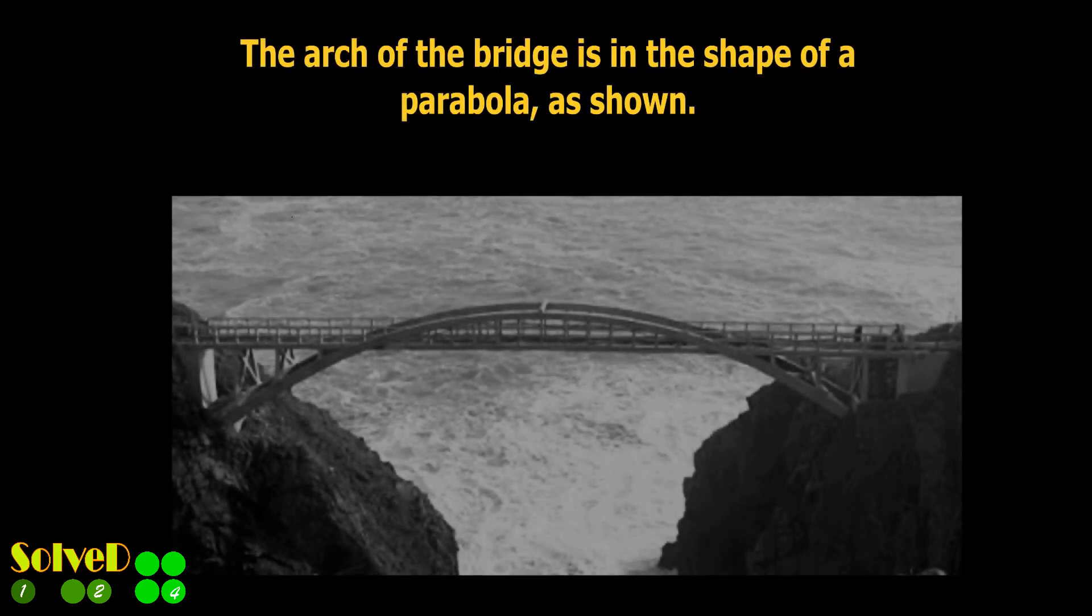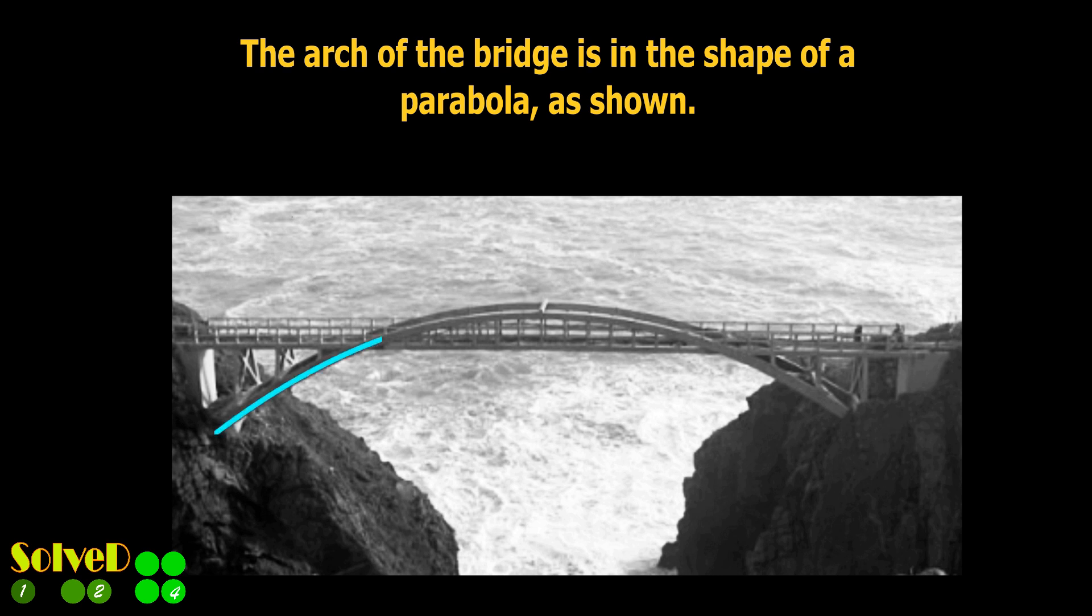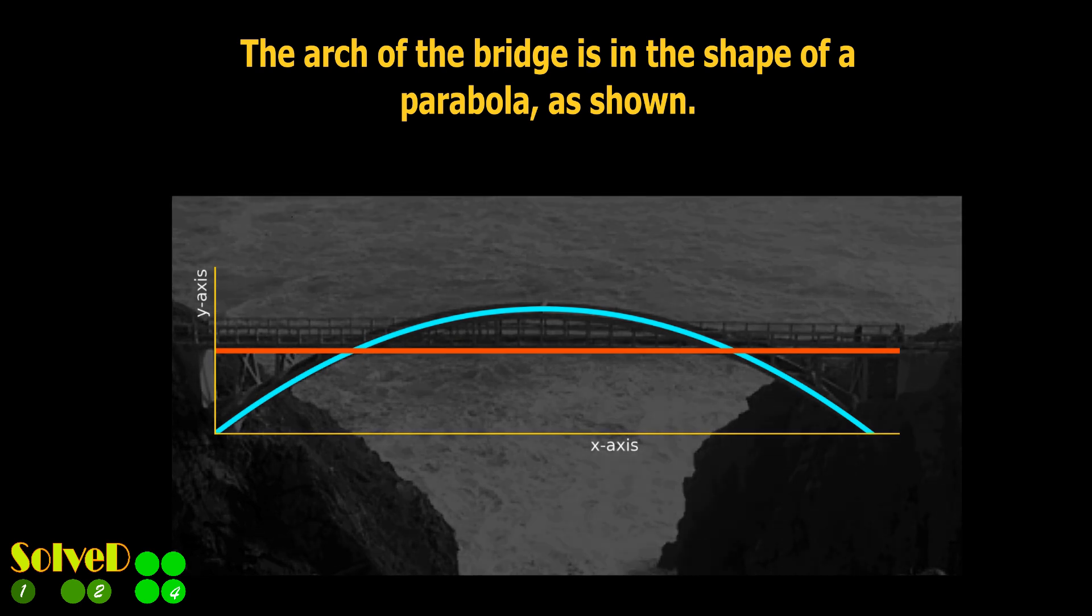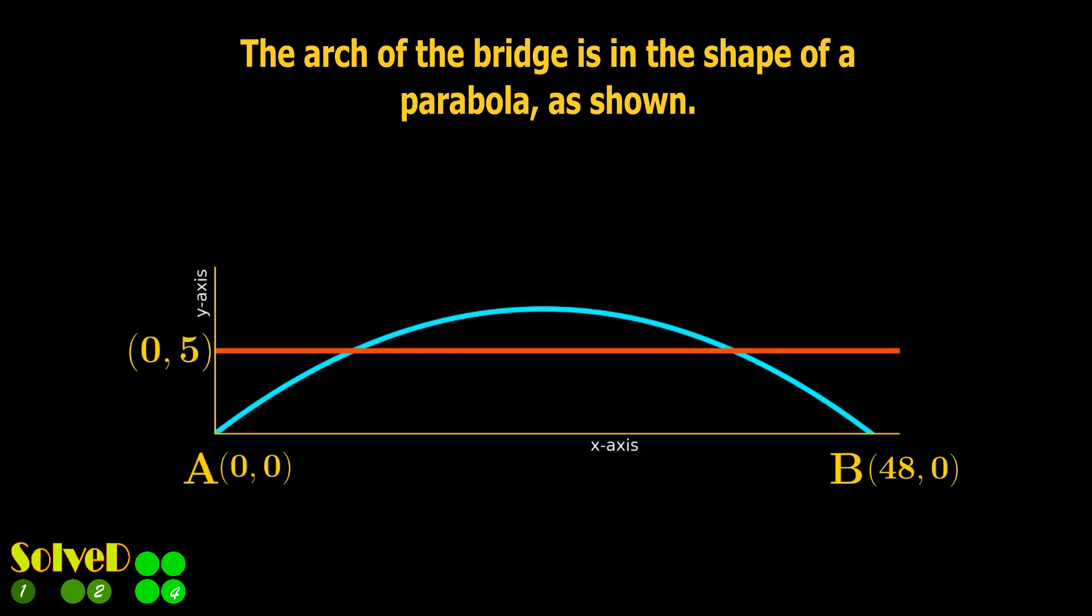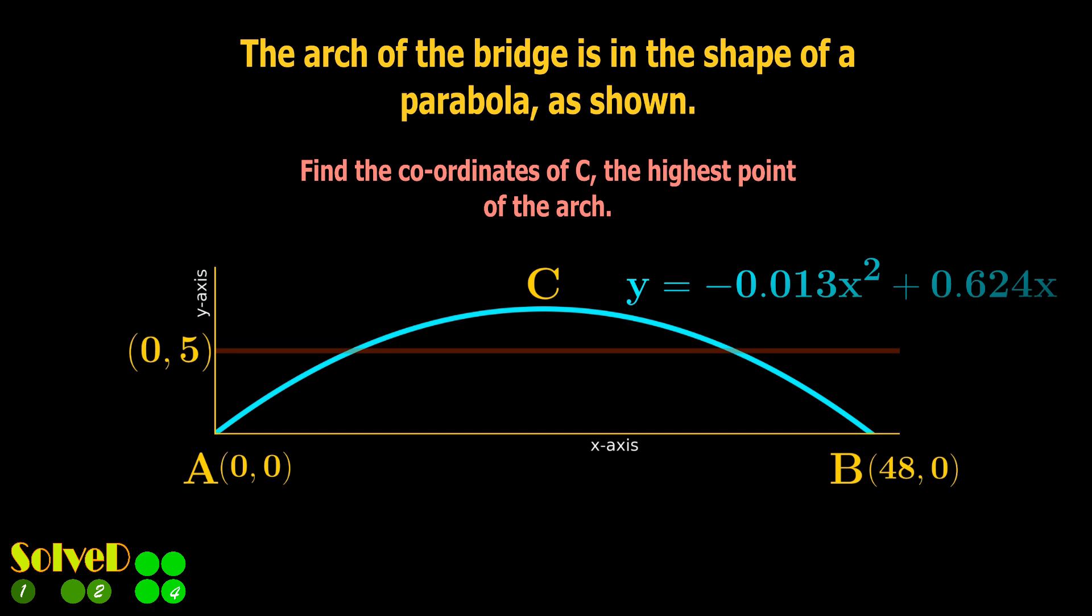The arch of the bridge is in the shape of a parabola, as shown. Find the coordinates of point C, that is the highest point of the arch. The equation of the curve is given.